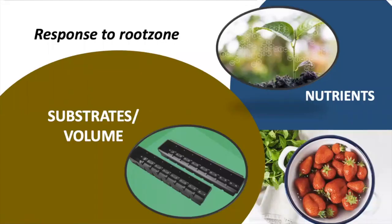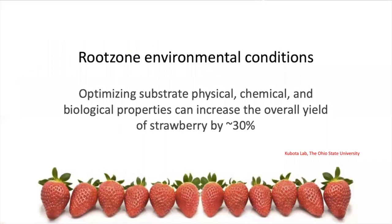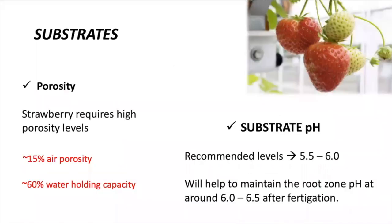Now let's move to a very important aspect when growing strawberries: the root zone. Let's learn about substrates and nutrients. By optimizing physical, chemical, and biological properties at the root zone, we can increase yield in strawberry by 30 percent. So it's very important to pay attention to these variables. Strawberries grow better in substrates with high porosity. It's recommendable to use a substrate containing 15 percent air porosity and 60 percent water holding capacity.